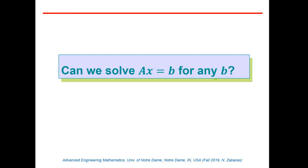Let's start lecture two. The new problem today is: can we solve Ax equal to b for any vector b? I give you a matrix A, and I ask, can you find an x so that Ax equals b? Before, we discussed only the left-hand side and said Ax is a linear combination of the columns of A. Now I give you a b and ask, can you find an x?